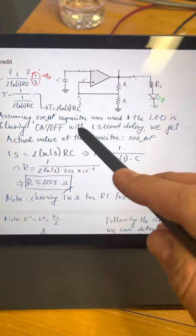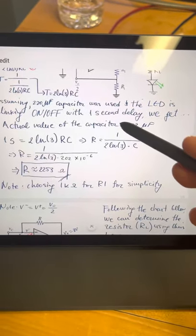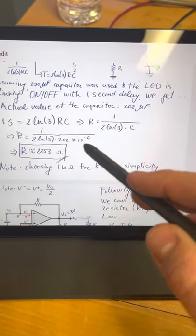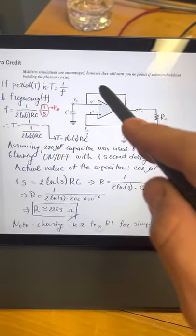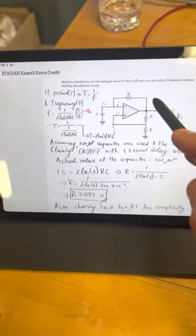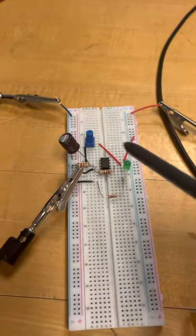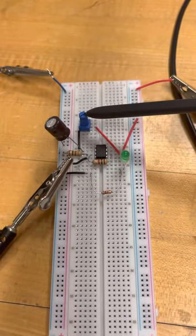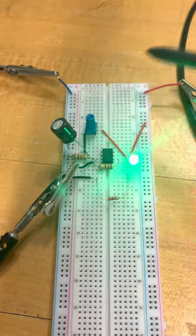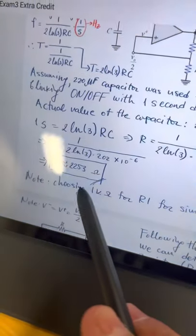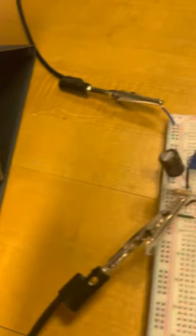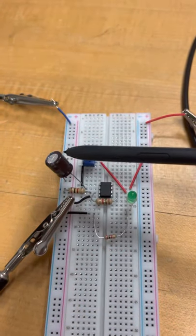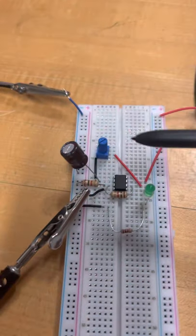Knowing the period, which is one second, and knowing the capacitor, I determined the resistor value in the oscillator circuit, which is the feedback resistor. In the circuit, a potentiometer was used to get the value of 2253 ohms. This is the capacitor, 220 microfarads.